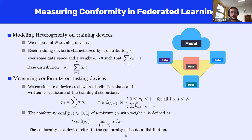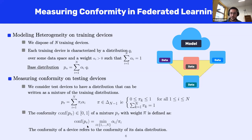This is a reasonable assumption when the population of devices available at training time is a good representation of possible distributions, and it is likely to occur when we have an important number of training devices. We define the conformity of a given test device as follows: if pi denotes the associated weight vector, the conformity of distribution P_pi is the minimum over i of the fraction alpha_i over pi_i. This number is always between zero and one. If equal to one, pi equals the trend distribution P_alpha, meaning the distribution follows the training trend. If conformity is close to zero, the testing device departs largely from the training distribution.